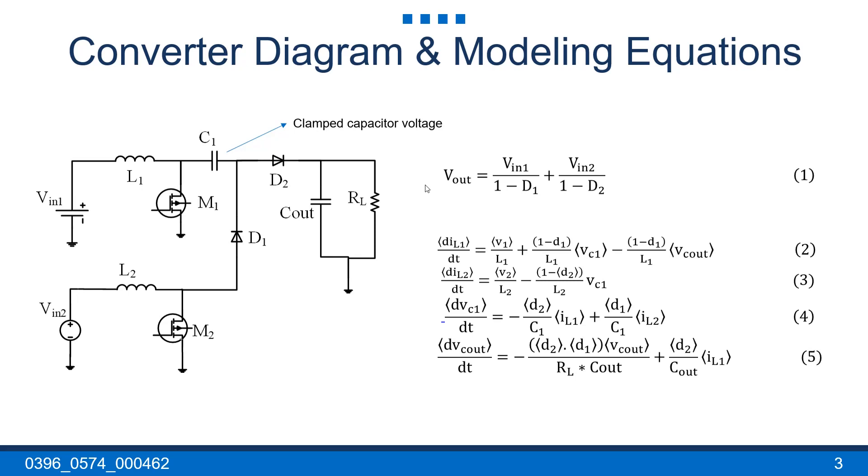Mode 2, when MOSFET M1 is on and M2 is off. In this mode, L1 is charging and L2 is discharging in C1. D1 is on and D2 is off, blocking the output voltage.